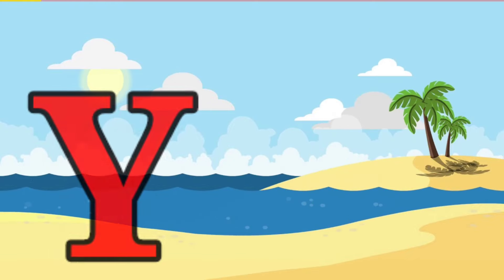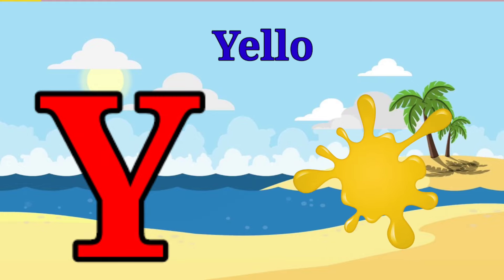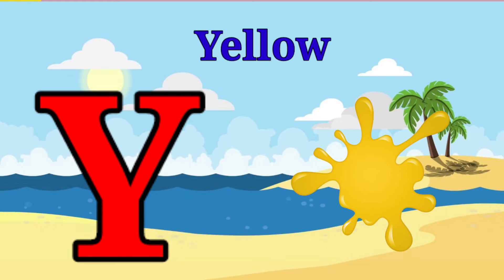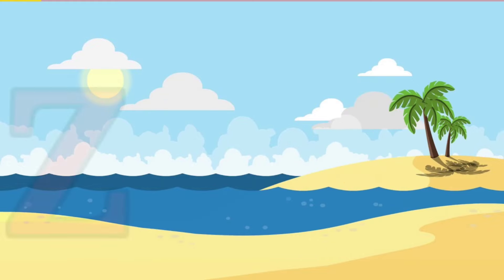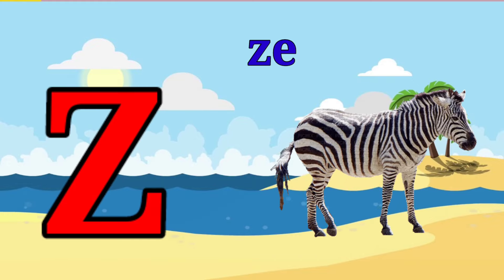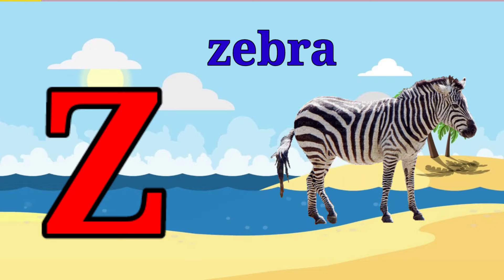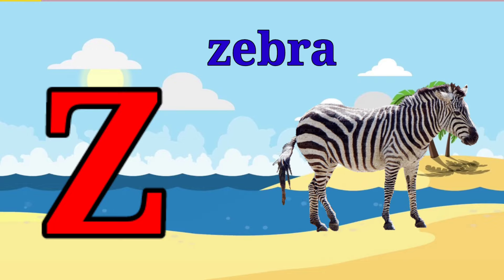Y is for yellow, ye-ye-yellow. Z is for zebra, z-z-zebra.